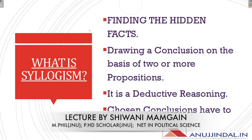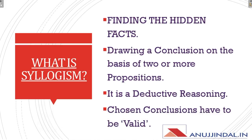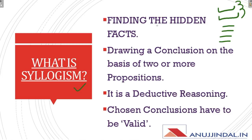So what is syllogism? In your exam, there are a lot of questions that you can ask about proper definitions. First of all, you need to know what syllogism is. It is about finding the hidden facts. You have two statements in syllogism — two propositions — and you have to find a conclusion. So in your statements, there are some things that you don't directly say. Syllogism is about finding the hidden facts that have not been directly stated.